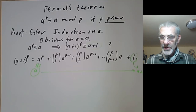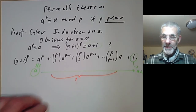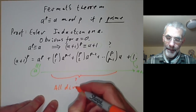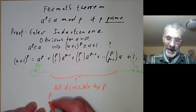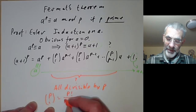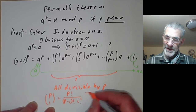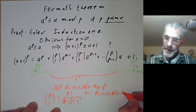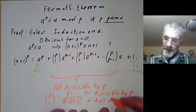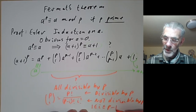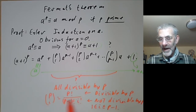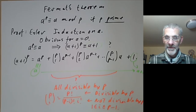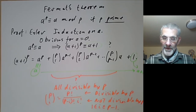On the other hand we've got all this junk in the middle — so what do we do with it? Well, it's all divisible by p. The reason is that all these binomial coefficients are divisible by p: p-choose-i equals p-factorial over (p-minus-i)-factorial times i-factorial, which is divisible by p, but the denominator is not divisible by p, at least if 1 ≤ i ≤ p-1. Here we're using the fact that p is prime.